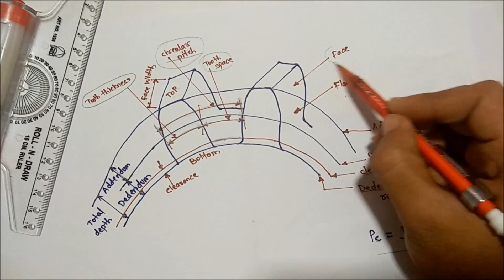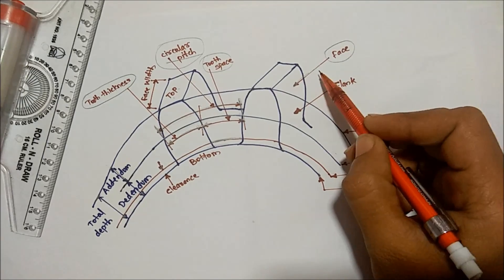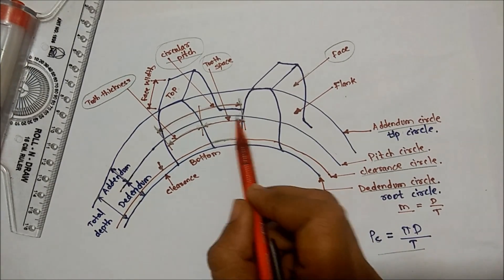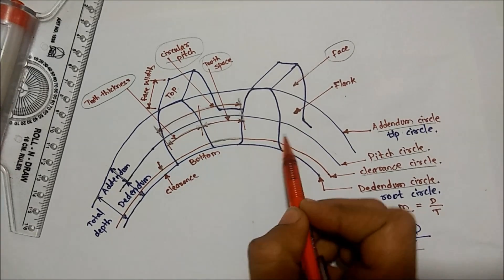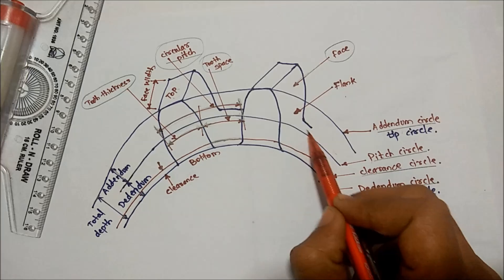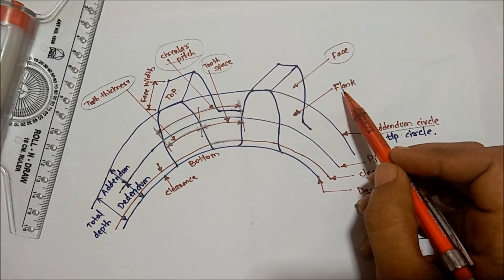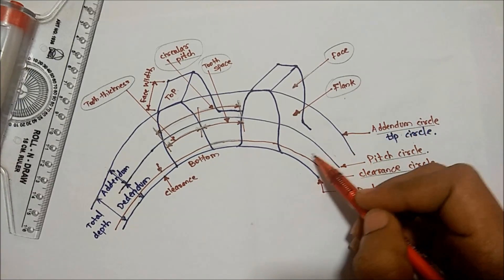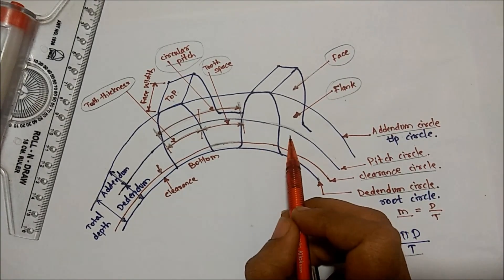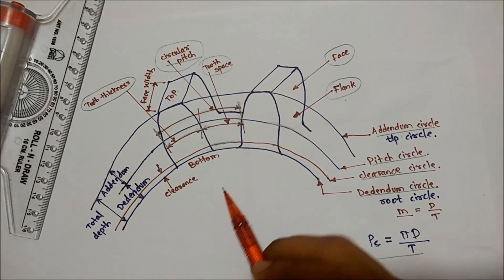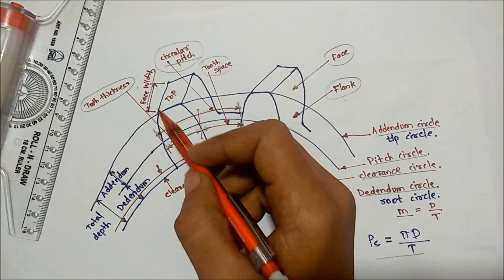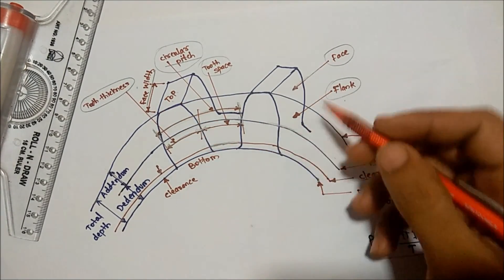The face of the tooth is the surface of the gear tooth above the pitch surface. The flank is the surface of the tooth below the pitch circle line. Face width is the width of the gear tooth measured parallel to its axis.